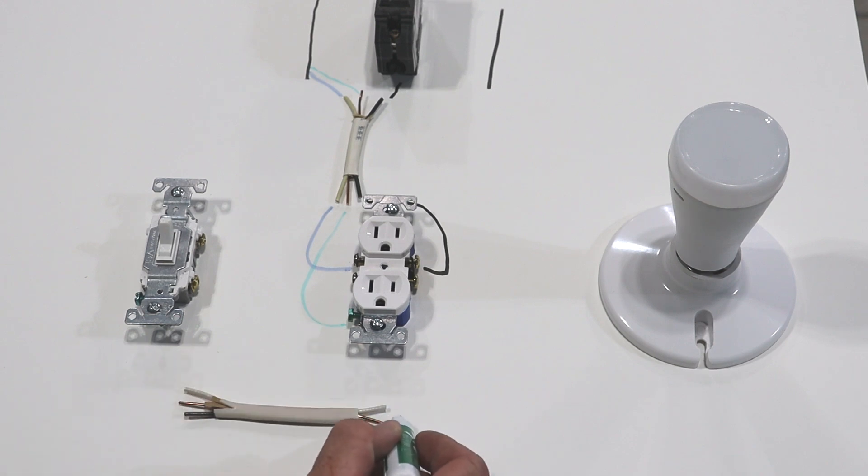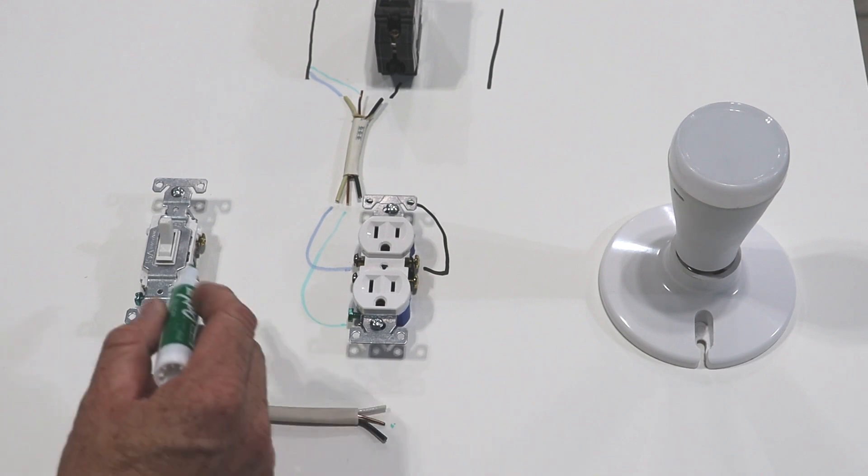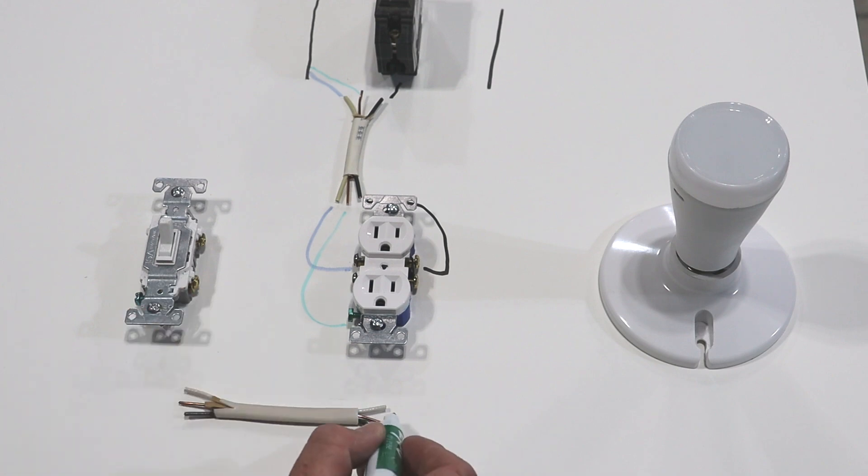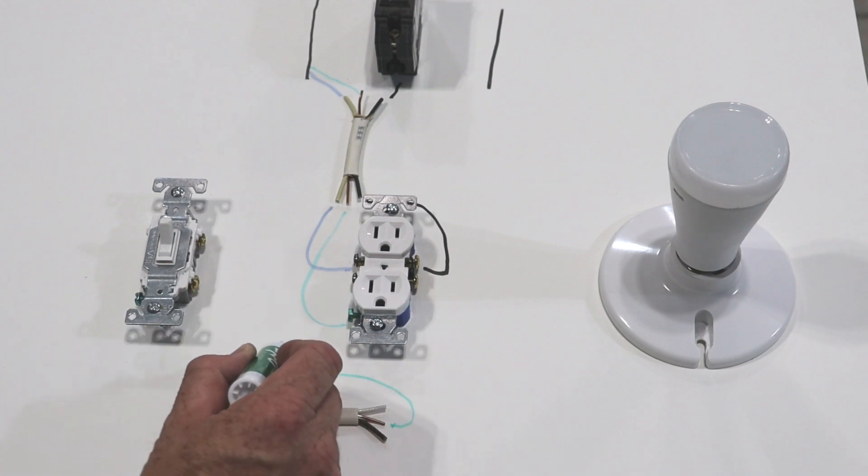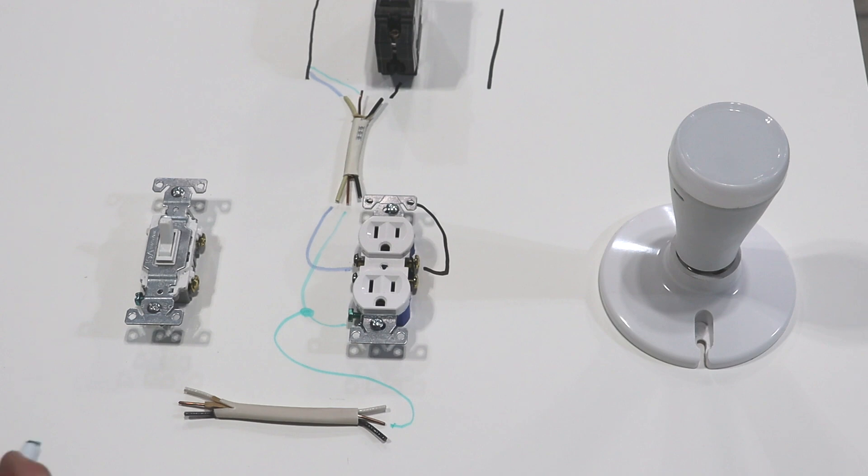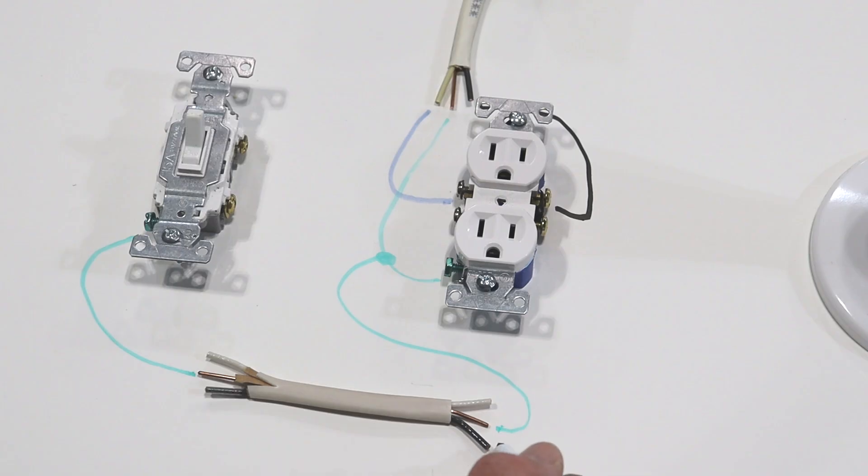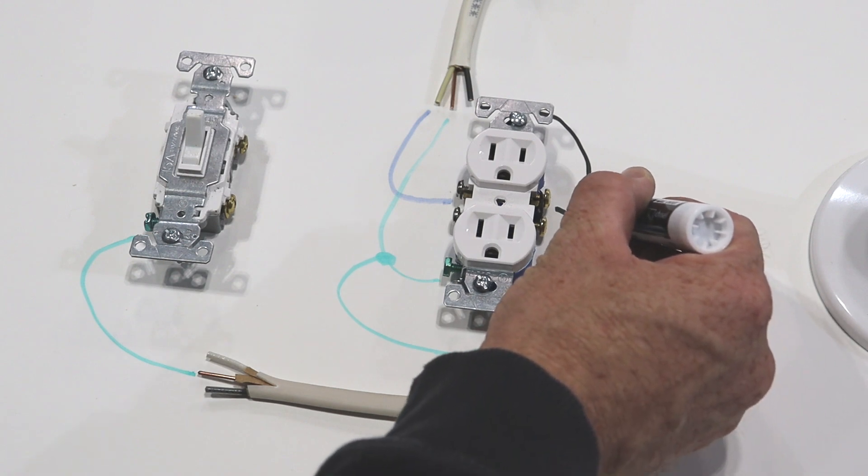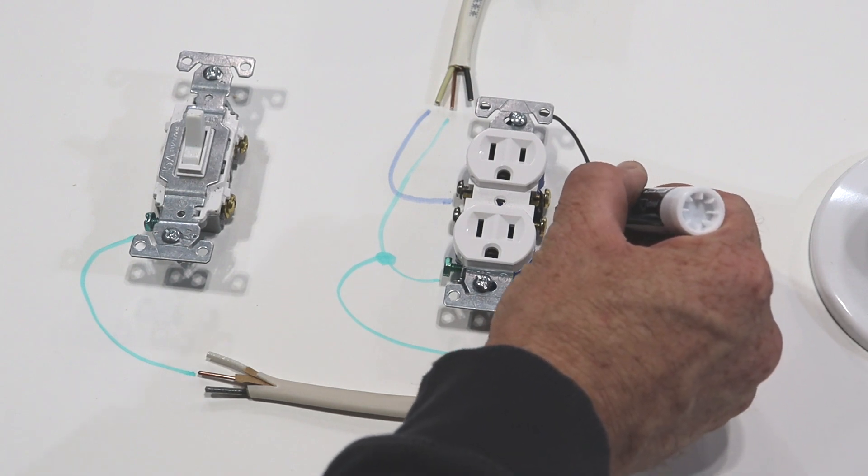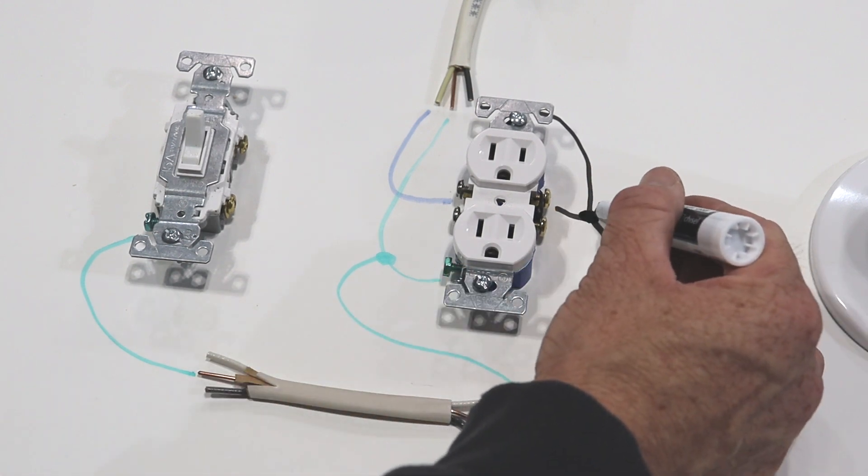We'll come off from our Romex that's going to go up to our switch and we'll come over here and we'll wire nut this together. Then we'll take our ground wire and connect it to the screw on the switch. Then what we're going to do is we're going to run our black wire over to our other black wire and make a pigtail here, so this would be wire nutted.